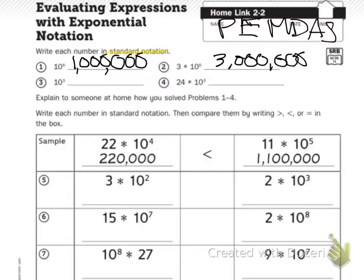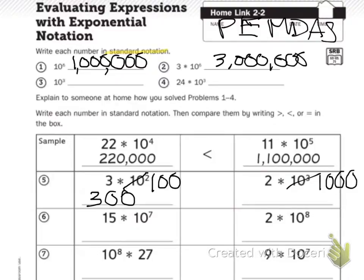Then it says write each number in standard notation, then compare by writing greater than, less than, or equal in the box. First, I want to evaluate 10 to the second power — I write a 1 with two zeros, so 3 times 100 is 300. Then 10 to the third power gives me a 1 with three zeros, so 2 times 1,000 is 2,000. I write my greater than symbol. They wrote 22 and then added four zeros, and 11 first with five zeros. Do problems 6 and 7 on your own.